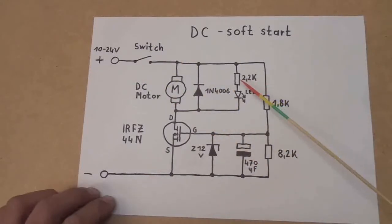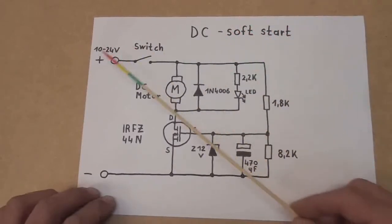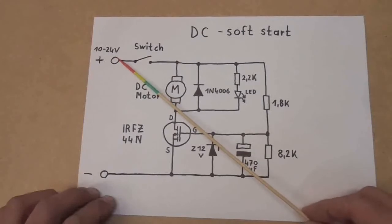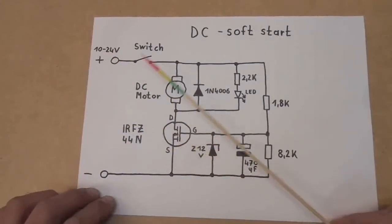Okay, so you have here your incoming supply. This circuit with these component values is capable of voltages between 10 and 24 volts DC. Here is your battery or power supply, here is the switch of your device.